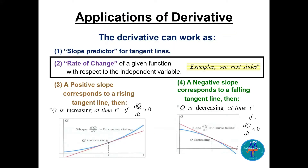Applications of the derivative: it can work as a slope predictor for tangent lines, and as a rate of change. Additionally, if the slope is positive, the function is increasing; if the slope is negative, the curve is decreasing.